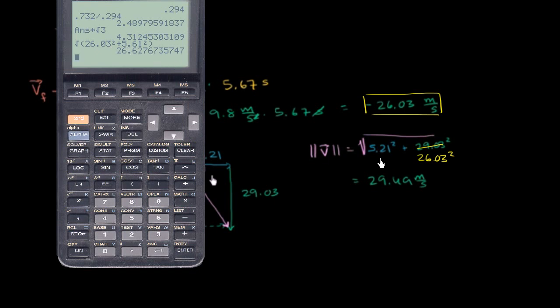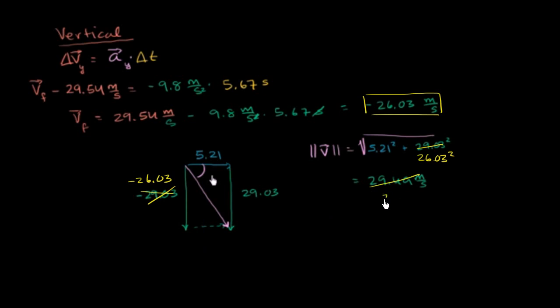Actually, I did it wrong again, so it's 5.21. Let me redo it. So 26.03 squared plus 5.21 squared under the radical gives us 26.55. So this right over here should be 26.55 meters per second. So that is the magnitude of our final velocity.